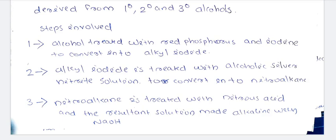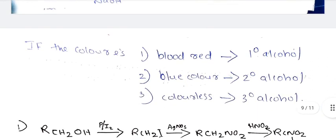Nitroalkane is treated with nitrous acid (HNO₂). A product is formed and treated with a basic solution. Now, if the color is blood red, that will be a primary alcohol. Blue color indicates secondary alcohol. Colorless indicates tertiary alcohol, as there is no reaction.